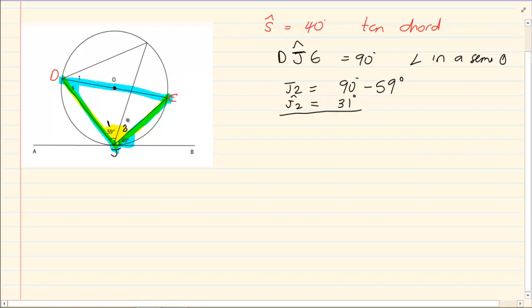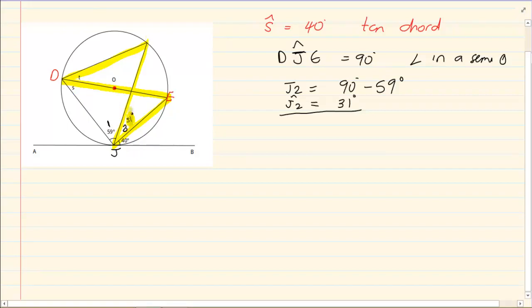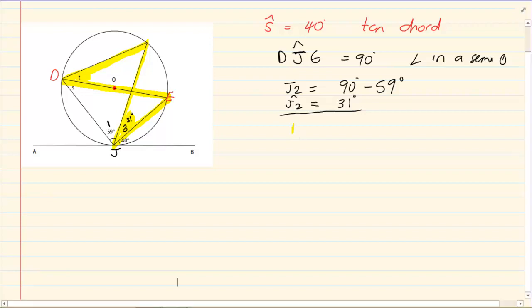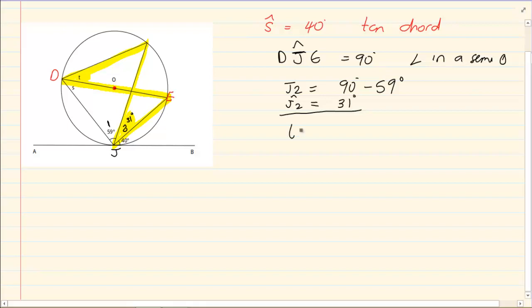Now I have that this angle is 31 degrees. Looking at what we have here — the tips of the butterfly shape — I can say they are equal. So T is equal to 31 degrees, and the reason is angles in the same segment.